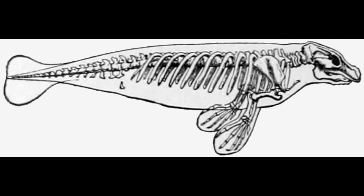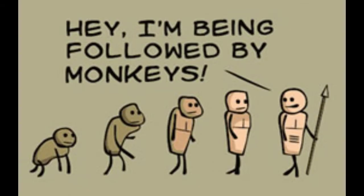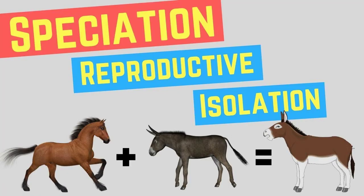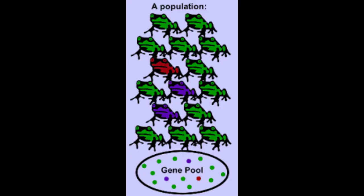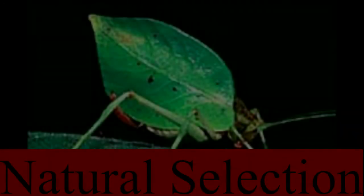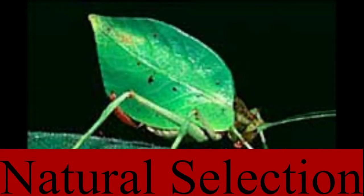Next, let's jump over to macroevolution and microevolution. Macroevolution involves long-term, large-scale changes — so large that a species can no longer reproduce with other species. Microevolution, on the other hand, involves changes within a species population's gene pool over time, which may result in variations within the population.